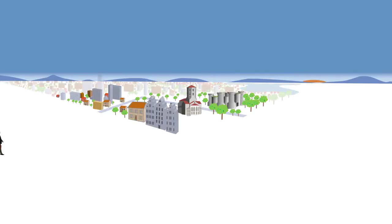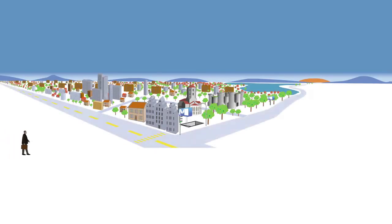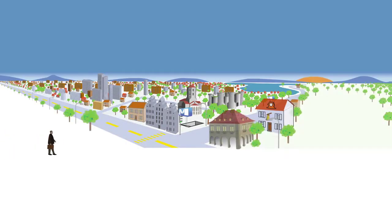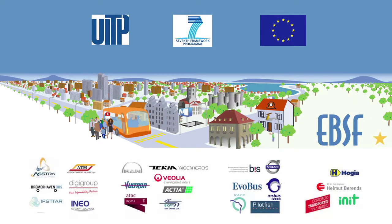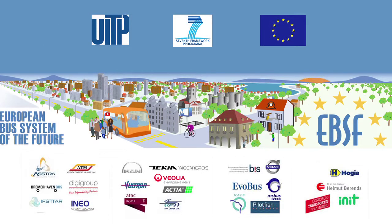The European Bus System of the Future has been built with the objective to create a real and concrete IT architecture and to test different kinds of scenarios defined by all partners and based on the architecture specifications. The main goal behind is to validate the conformity and feasibility of EBSF developments with current and updated devices.